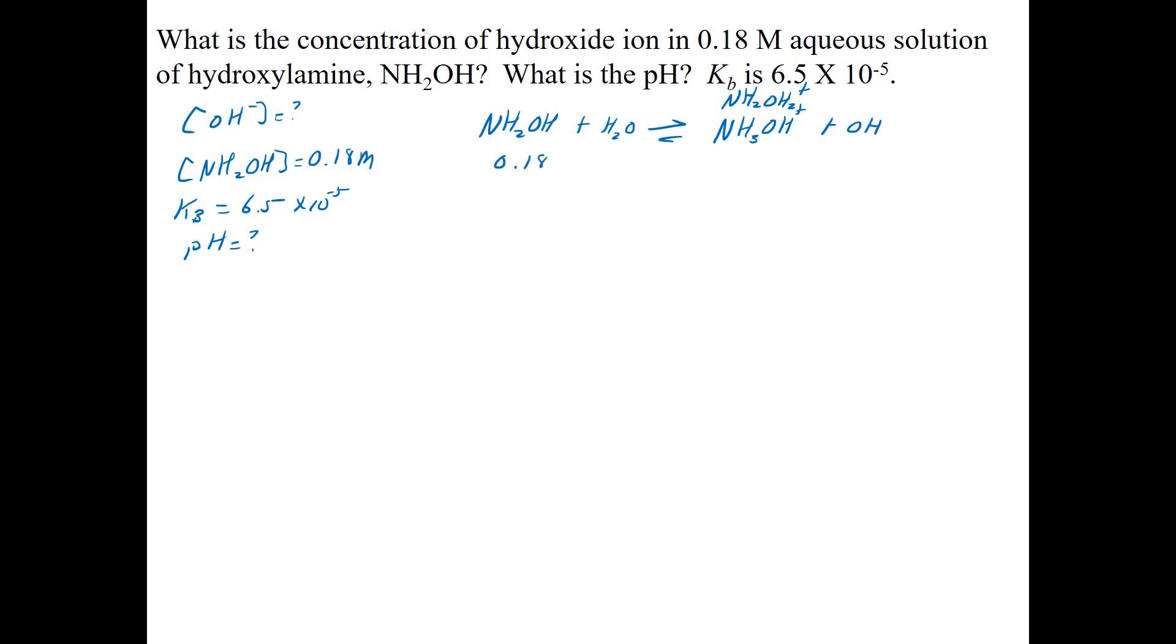This is 0.18 for my I, C's, and E's. Again, I cross out the water. Now, when we did this with Ka's, I told you it was the acid concentration divided by Ka. This is going to be the base concentration divided by Kb to see if I need to use the quadratic.